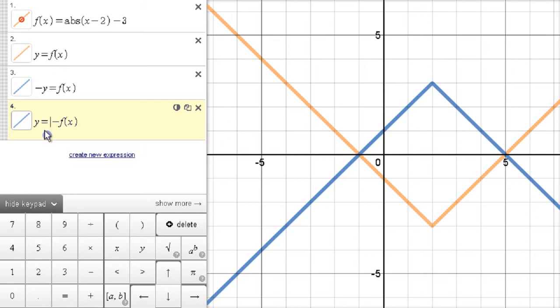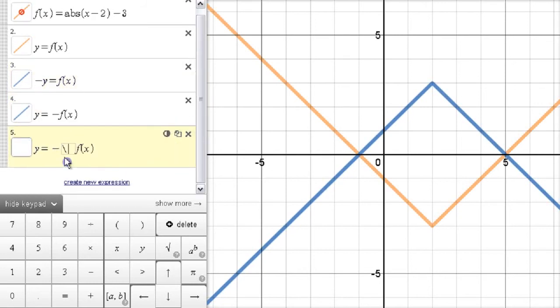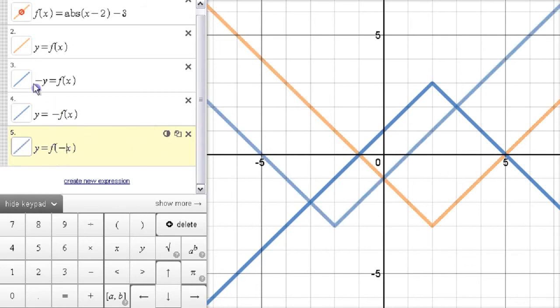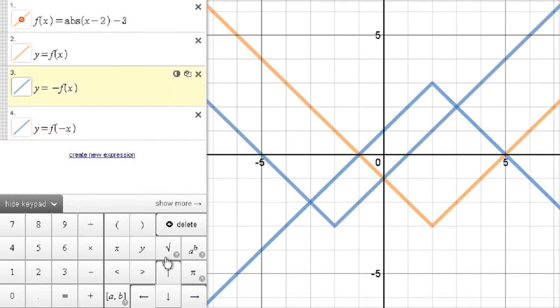The thing to realize is the difference between that other kind of reflection that we had. So let's actually leave the negative there. Let's duplicate this again. But we'll go back to the previous thing we did, which was a negative inside here.